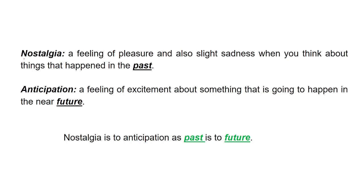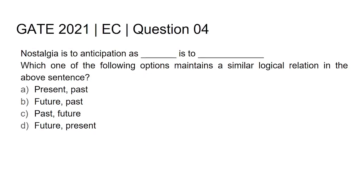We find that nostalgia has a relationship with the past, and similarly anticipation has a relationship with the future. So we can say that nostalgia is to anticipation as past is to future. Hence our answer will be option C: past, future.